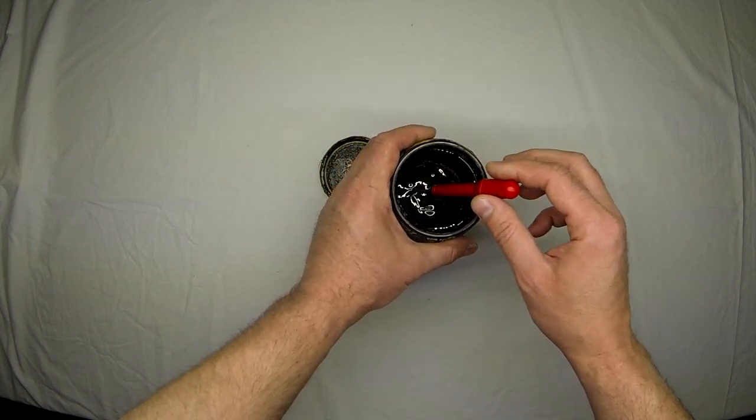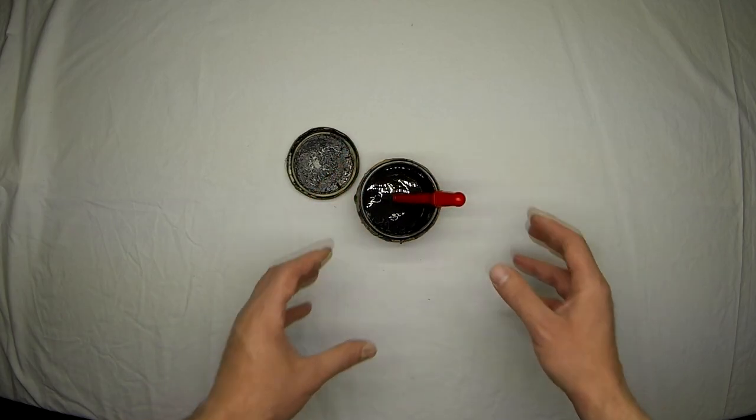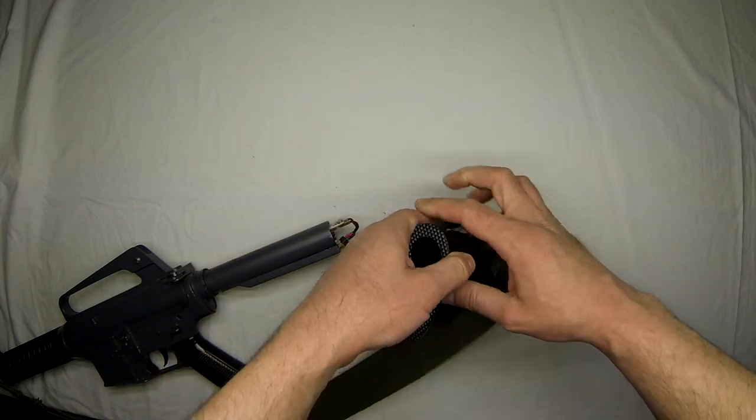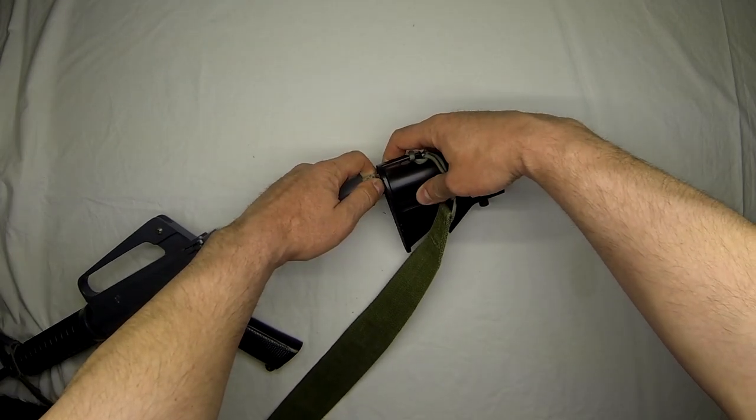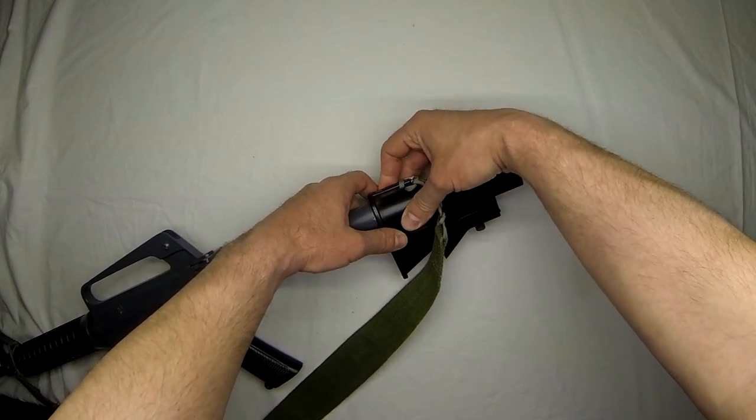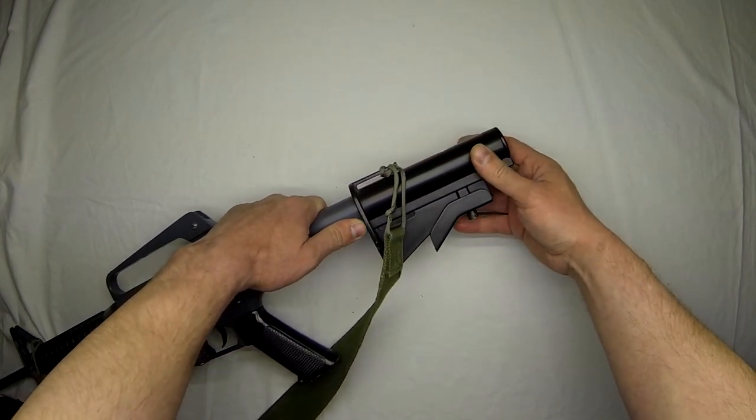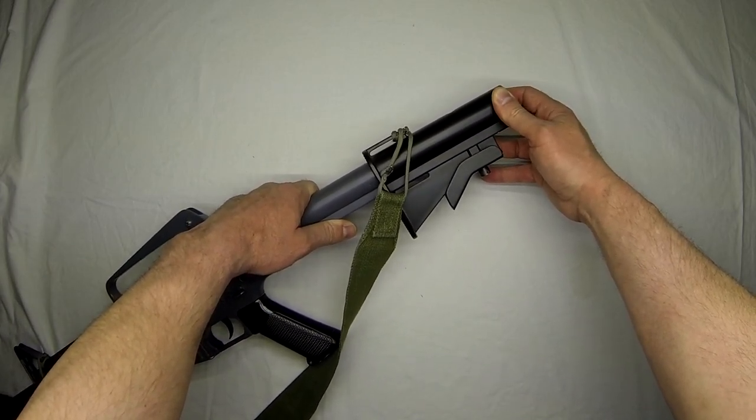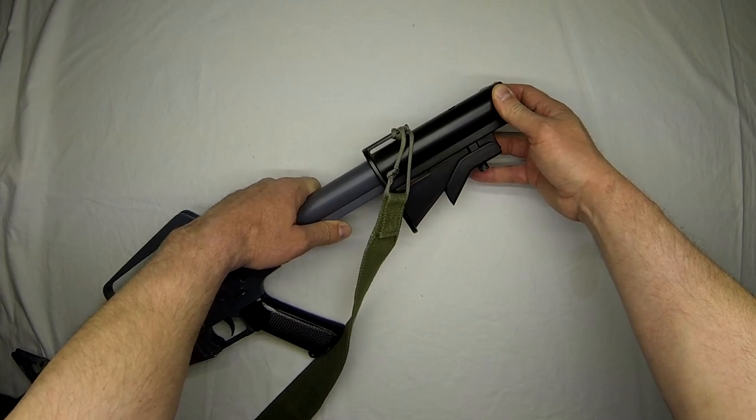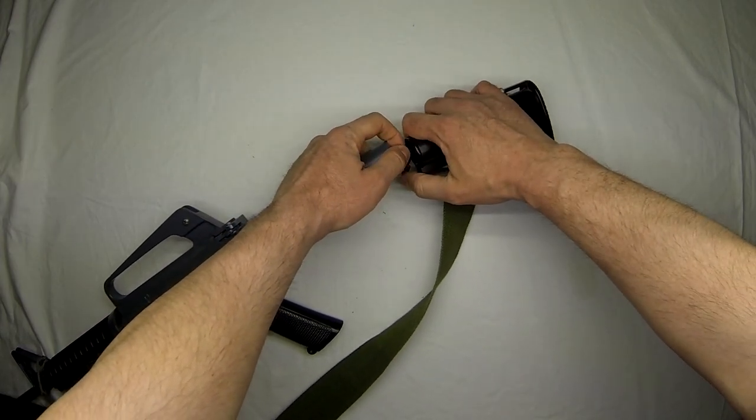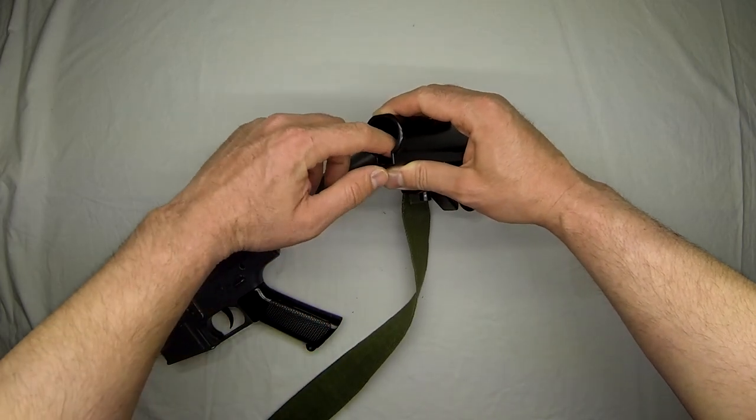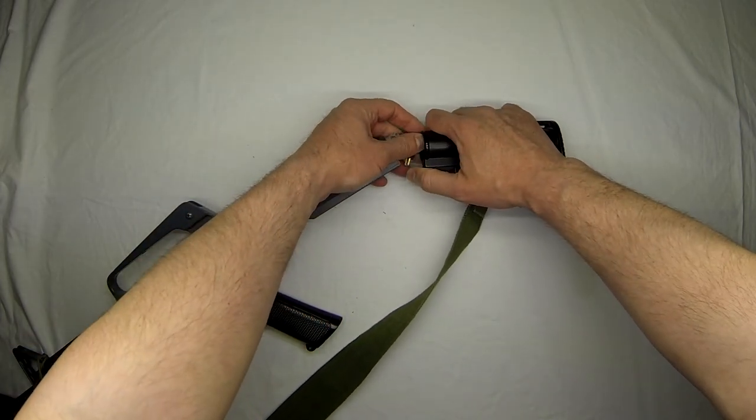Let's take a look at some examples for application. Do you have a wobbly part that needs some tightening up? Let's take a look at this stock. This was before, see how much wobble it has. This is after. I just applied some ABS paste on the inside of the stock and now it's very solid.